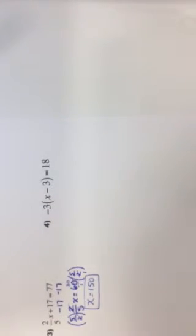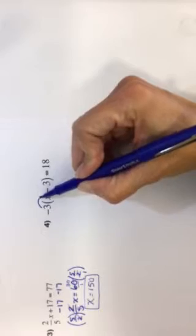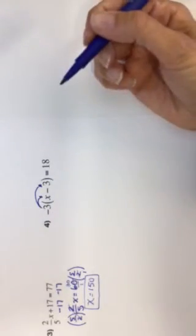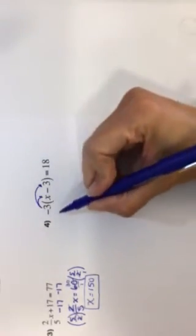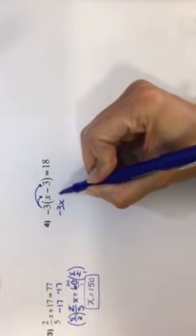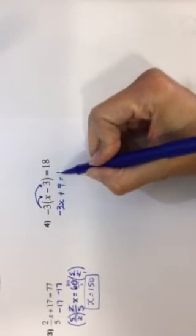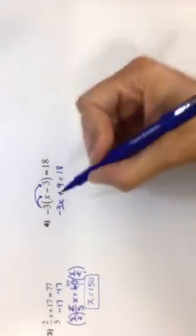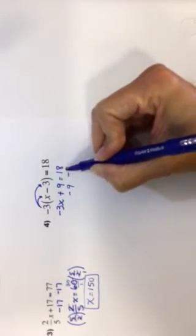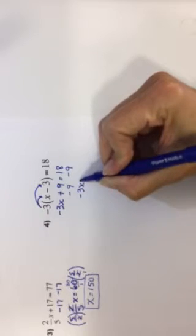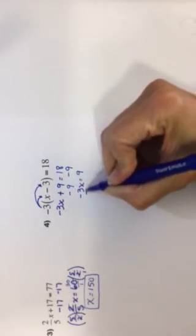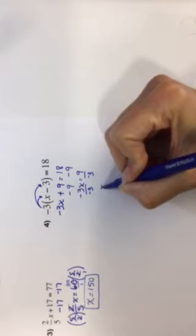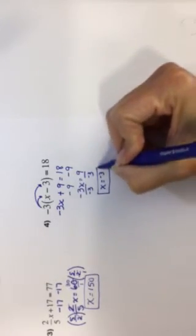Some of you started this problem by distributing the negative 3 on the outside of the parentheses to both terms on the inside of parentheses. That's a good way to start. That makes negative 3x plus 9. And negative times a negative is a positive. I didn't see very many errors on that. That was great to see. Could you also divide both sides by negative 3 first? Yes, you could divide both sides by negative 3 first. Negative 3x equals 9. Divide both sides by negative 3. And x equals negative 3.